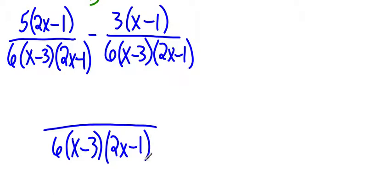So our denominator is going to be 6 times x minus 3 times 2x minus 1. In our numerator, we're going to distribute this. We're going to distribute the 5, and that gives us 10x minus 5. And notice this is a negative 3. Do you see this negative here? I'll just move it over there, so it's with the 3, and we'll distribute the negative 3. So that's going to be negative 3x plus 3.